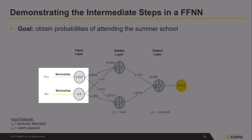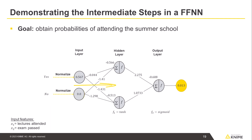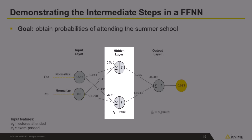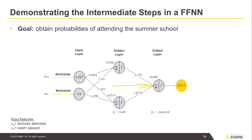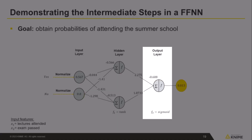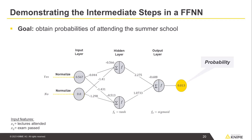First, we provide the normalized input features on the input layer. Then we pass these values to the next hidden layer, multiplying them by random weights and adding the biases to the product. Next, on the hidden layer, we apply an activation function to the received input. Finally, we pass the values — multiplied again by random weights plus a bias — to the output layer, where we apply another activation function. The output layer produces one value only, which represents the probability of attending the summer school.